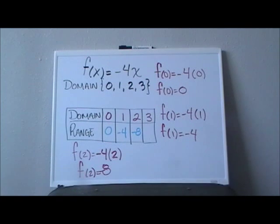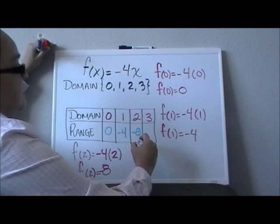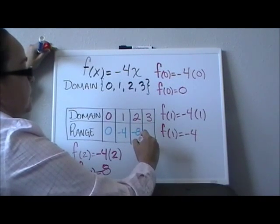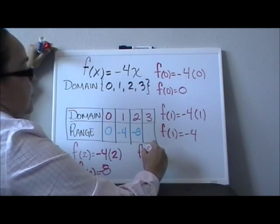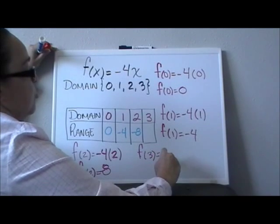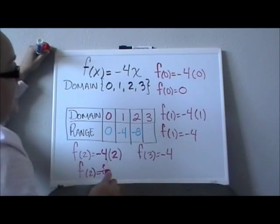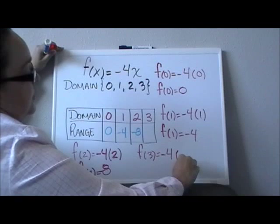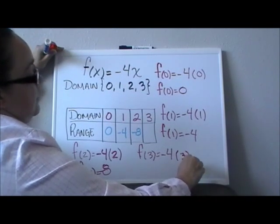My last one, same idea, but now the value of my x is 3. So that means that I am finding f of 3. And again, that will be negative 4, and instead of x we are going to put in parenthesis a 3.